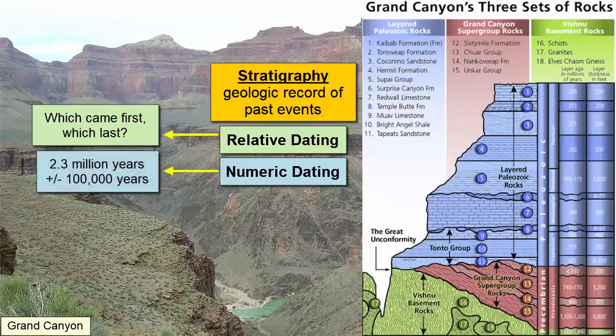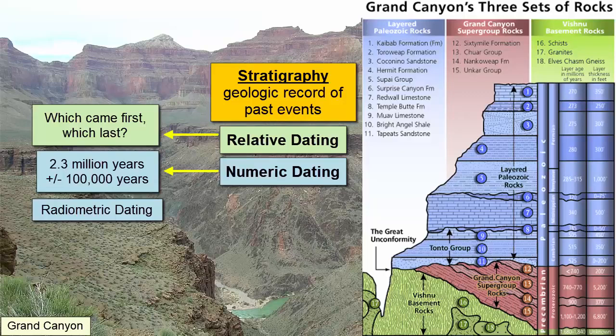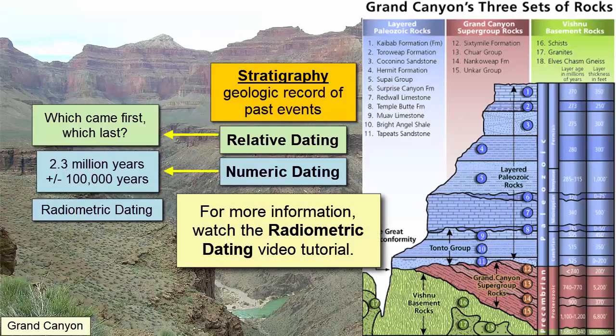Numeric dating applies a variety of techniques to determine a numeric age for a particular rock layer, like 2.3 million years plus or minus 100,000 years. Numeric ages have associated errors and can be determined only for rocks that contain the right ingredients — most rocks do not. The most common form of numeric dating is radiometric dating, which uses naturally radioactive elements trapped in rocks to calculate the dates of formation. For more information, watch the video tutorial on radiometric dating.